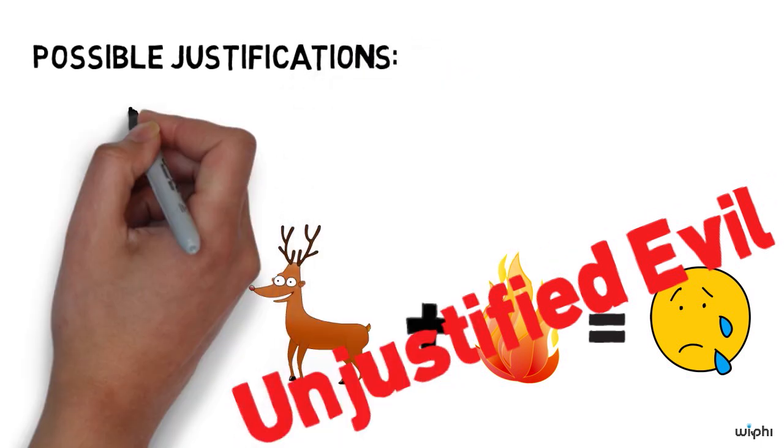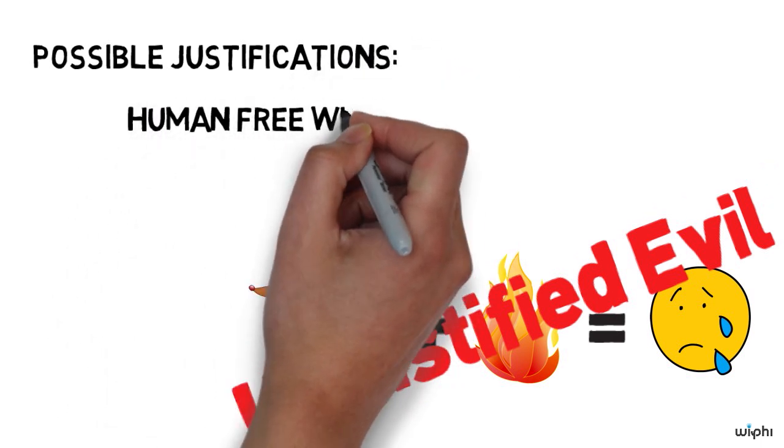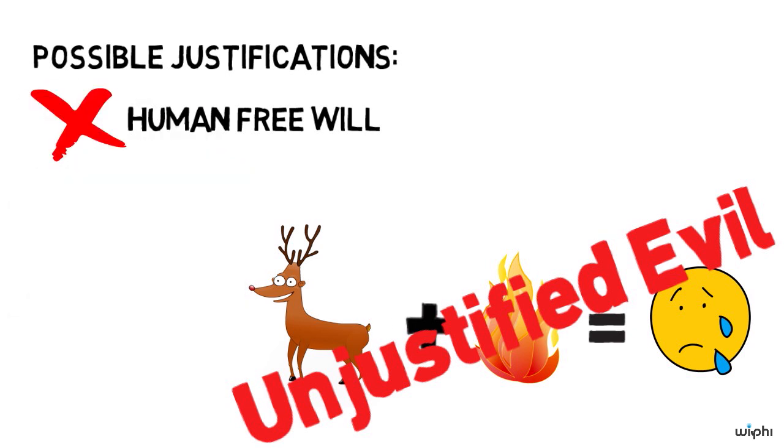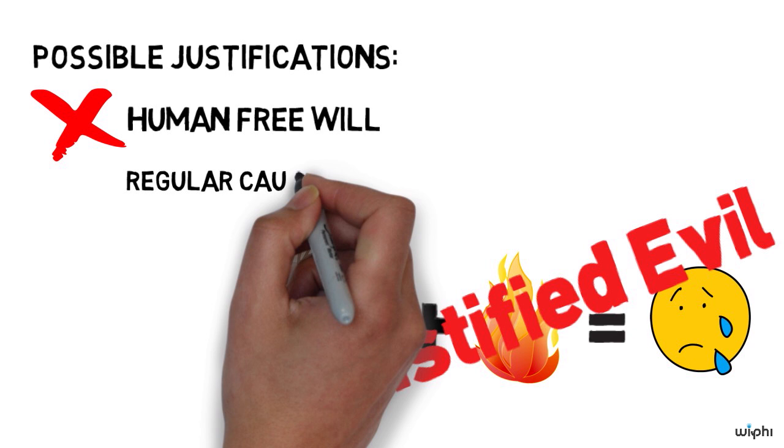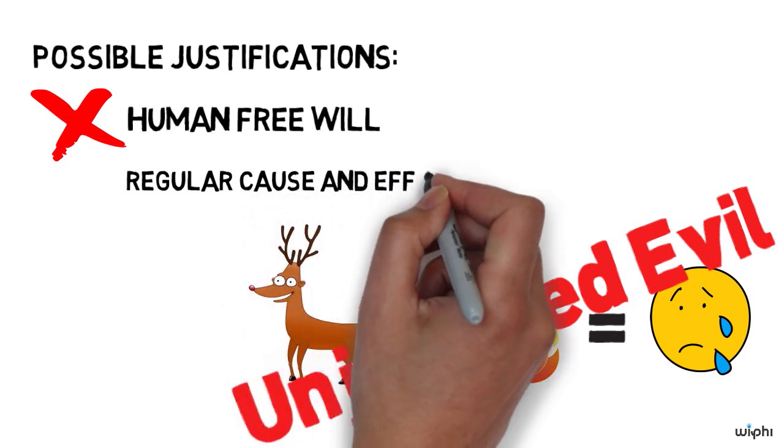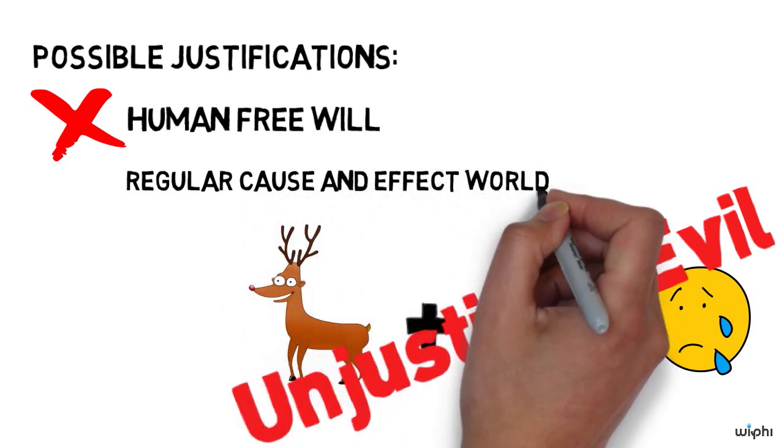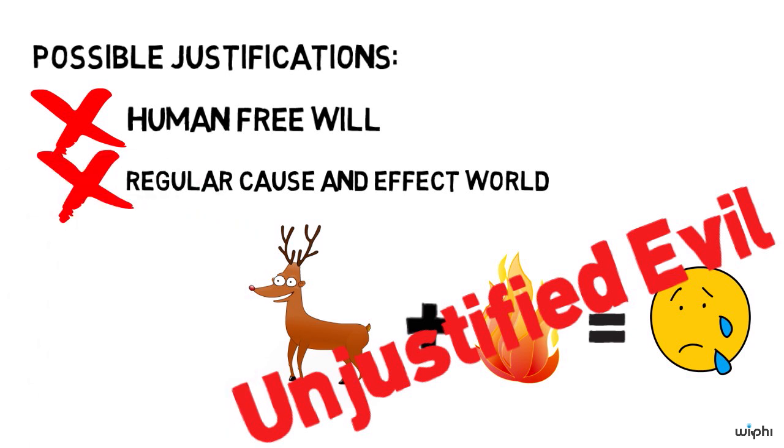For example, human free will seems to be irrelevant, especially if the fire was caused by lightning. Secondly, the fact that it's a good thing to have a regular cause and effect world doesn't seem to apply, because God could always end the deer's misery without really interfering with the regularities of the world. So here's a case that looks like an unjustified evil.